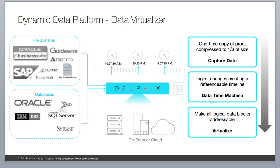Let me first talk about the Delphix dynamic data platform and the data virtualizer. What you're seeing on your screen is, in a nutshell, what the Delphix virtualizer does. Delphix is a virtual appliance — on-premise on your VMware, or in the cloud on Azure or AWS — and it sits as a machine image. Storage is attached to the Delphix engine, which then connects to those source systems: large databases such as SQL Server, Sybase, even MongoDB, or unstructured file systems. Delphix can virtualize unstructured file systems — we're not limited to just databases.